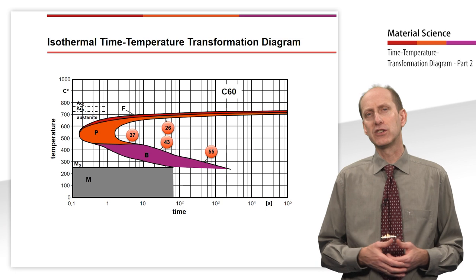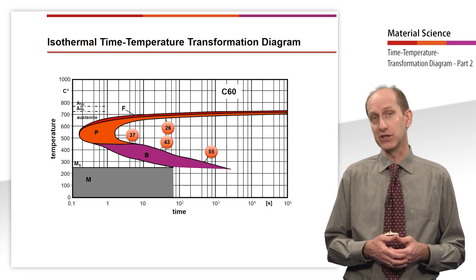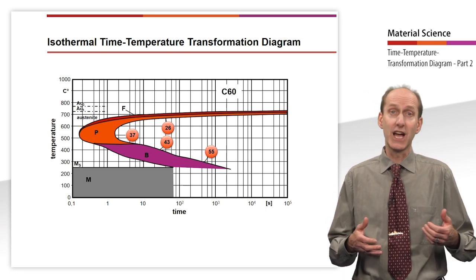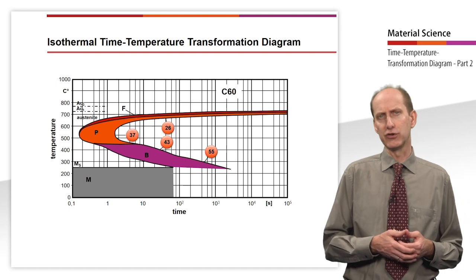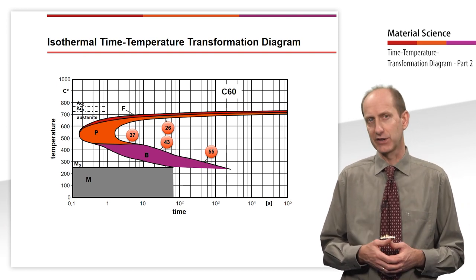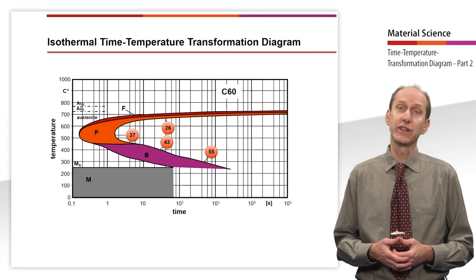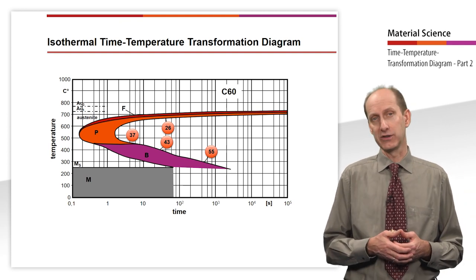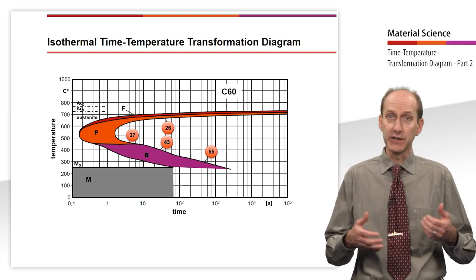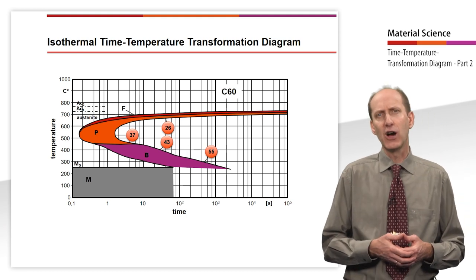Thus, a complete transformation to bainite is achieved. Since this type of heat treatment only produces comparatively hard microstructures, the hardness according to Rockwell C is often given. We will learn in the course of the video how this is measured.